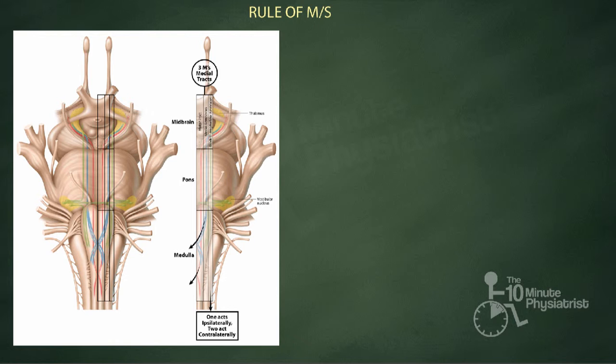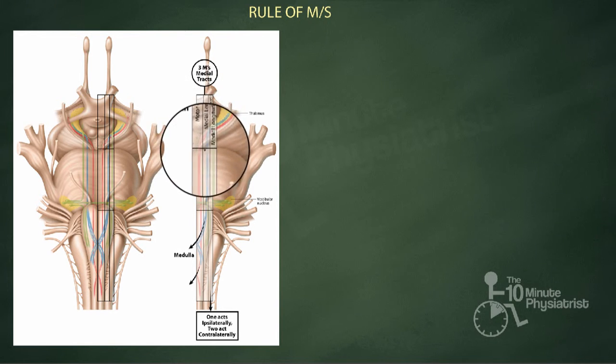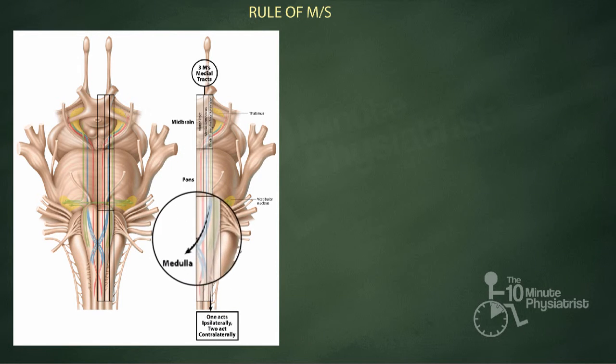So, three medial tracts, all of which start with M. First is the motor tract, which is cheating a little bit. Technically this would be the corticospinal tract, but unfortunately that doesn't start with M. So, we're going to refer to it as the motor tract, which is here in red, comes down and decussates in the medulla.